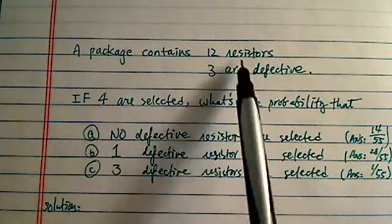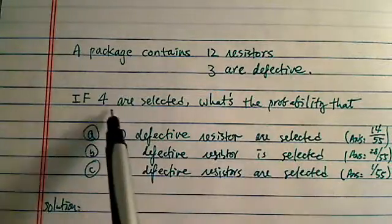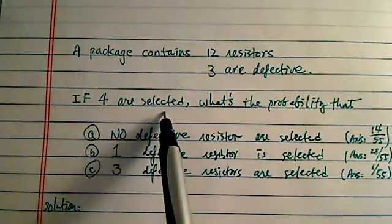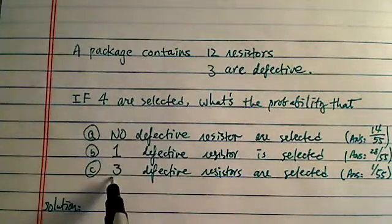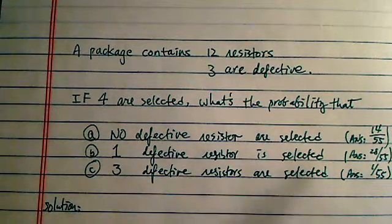Here we have a really interesting probability problem. We have 12 resistors, 3 are defective. We are told that 4 we want to select, and they want to know what the probability of no defective, 1 defective, and 3. And the answer is over here.